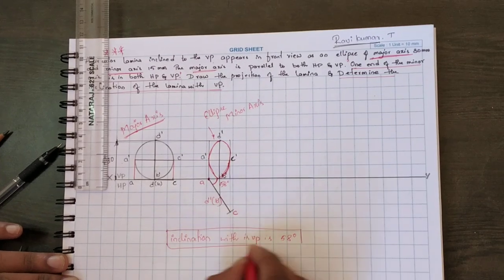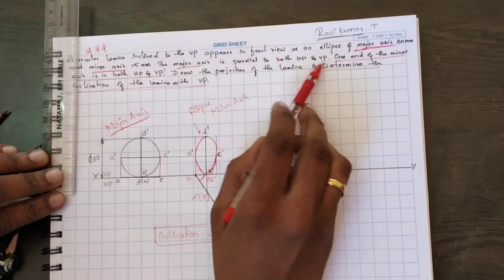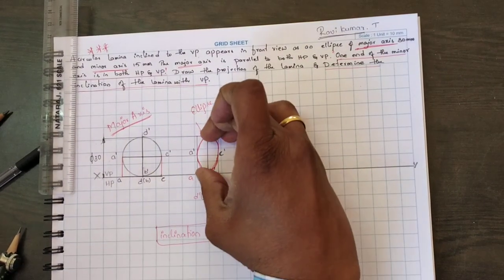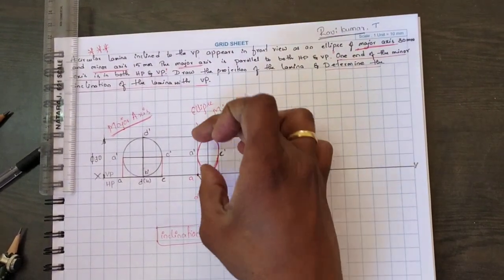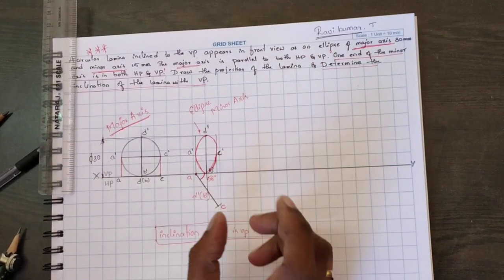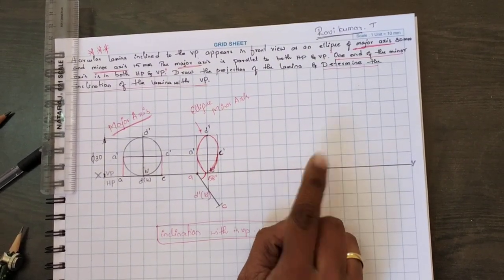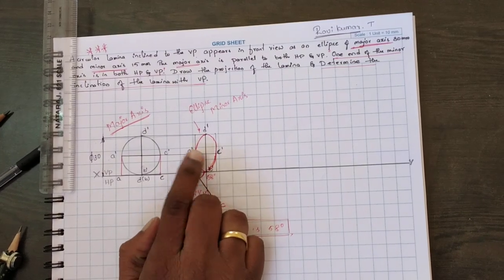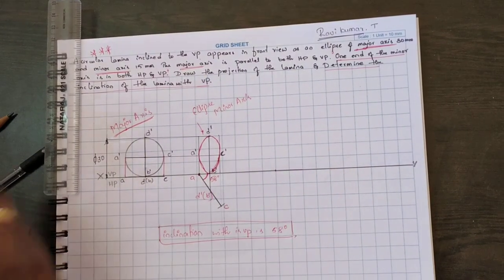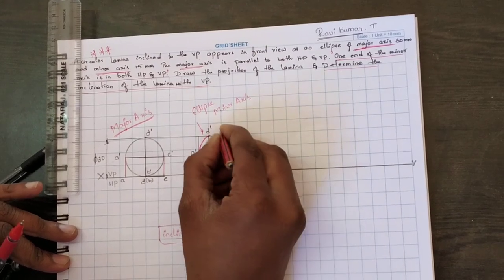Draw a box for this. Next you want to make the major axis parallel to both HP and VP. To make it parallel, place the major axis on the XY line — meaning make B dash and D dash parallel to the XY line. To make B dash and D dash parallel to the XY line, you have to place C dash or A dash on the XY line. I will take the resting position: I will take C on the XY line. Do the naming for this — box 1, 2, 3, and 4.